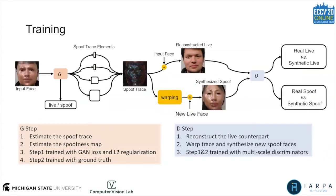To train our model properly, we deploy three steps at each training iteration. The first step is the G-step. The generator will estimate the spoof trace and the spoofness map for a given input face. The spoof trace will be supervised by the GAN loss and L2 regularization. The spoofness map will be supervised by the ground-truths, where the zero map represents a live map and the one map represents a spoof. In the second step, which is the D-step, we leverage the spoof traces from step one to reconstruct the live counterpart and warp the traces to synthesize new spoof faces.